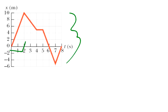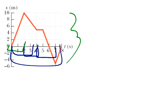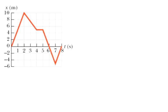The first one is between zero and two seconds. The second one is zero to four. The third one is from two to four. The fourth one is from four to seven, and the last one is from zero to eight. And so for all of those different time intervals, it wants us to find the average velocity.